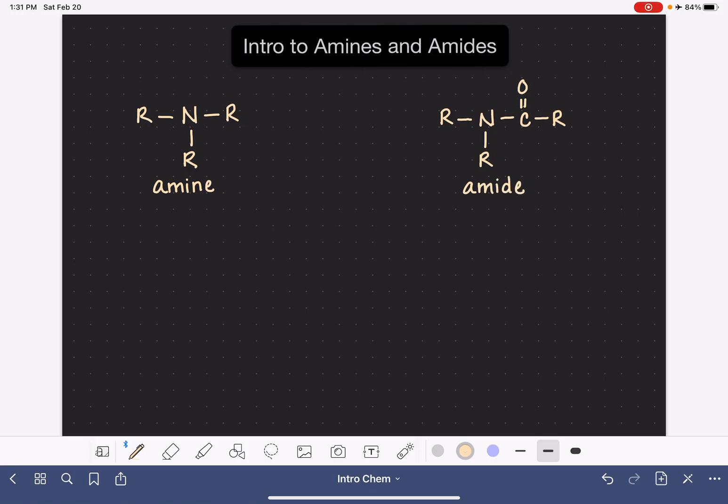We're just going to make a little note here that for both of these structures, R is going to be either hydrogens or carbon atoms. Now, amines can be further classified based on what these actual R groups are, like how many of them are hydrogens and how many of them are carbons.